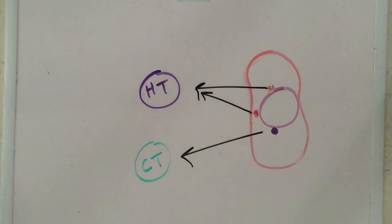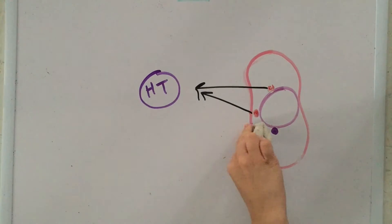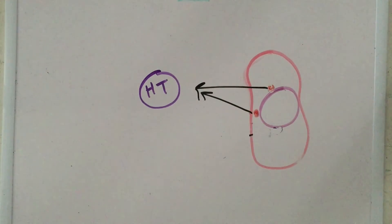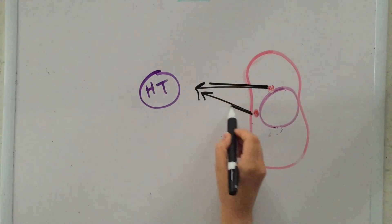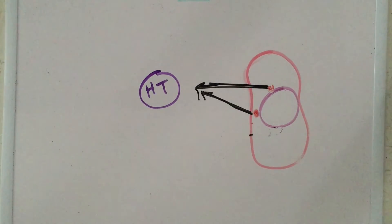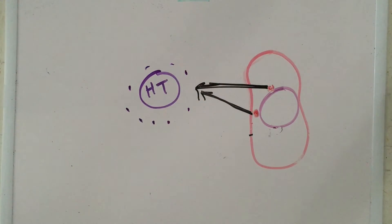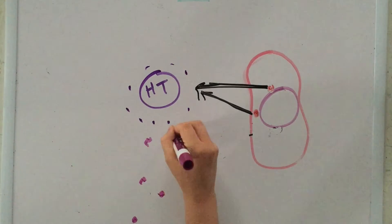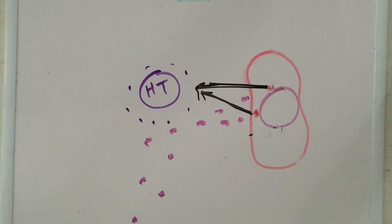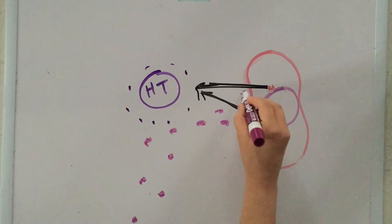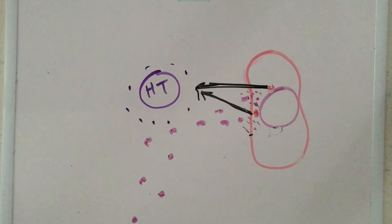The second rejection mechanism involves only helper T cells. The helper T cells are stimulated by class 2 MHC proteins and then release cytokines. The cytokines stimulate phagocytes to secrete lysosomal enzymes at the graft tissue, which digest tissues, leading to dryness and thickening. Cell death, or necrosis, follows.